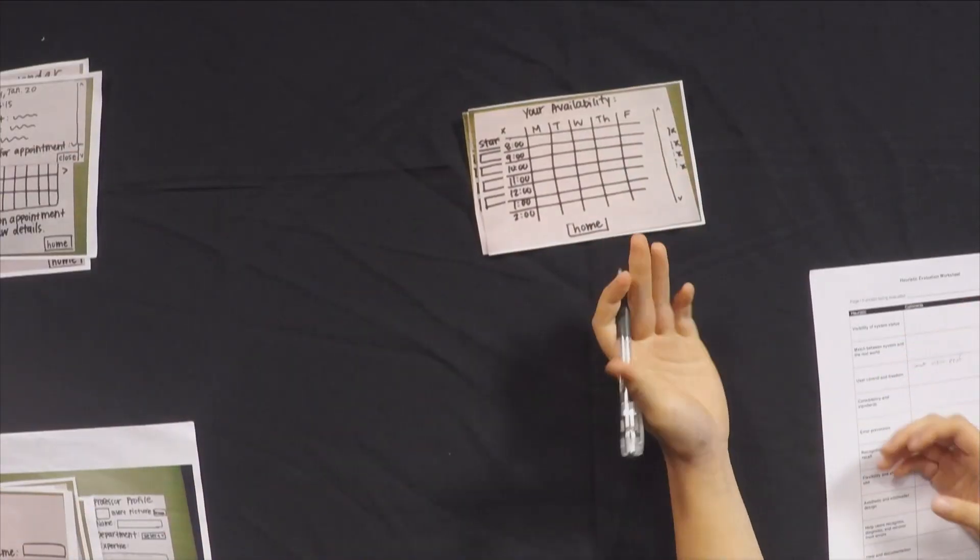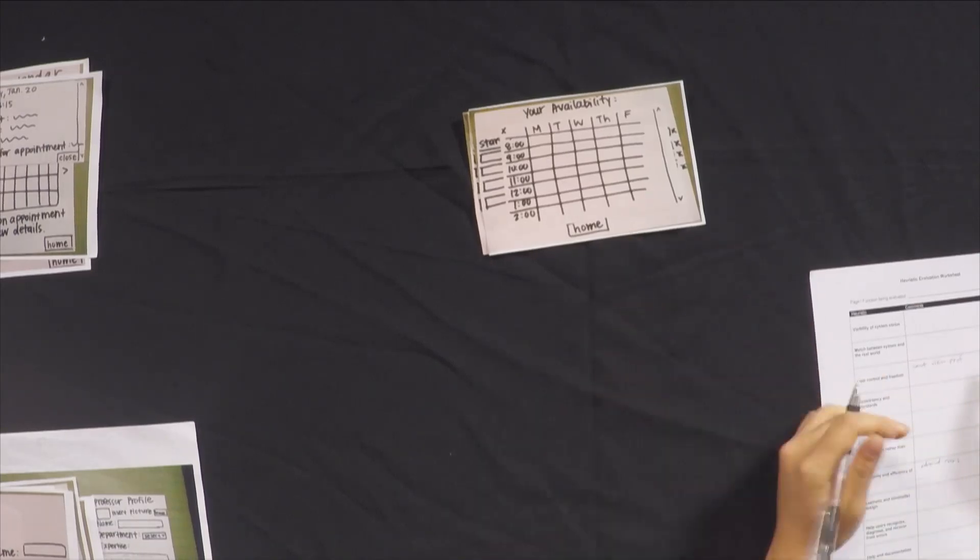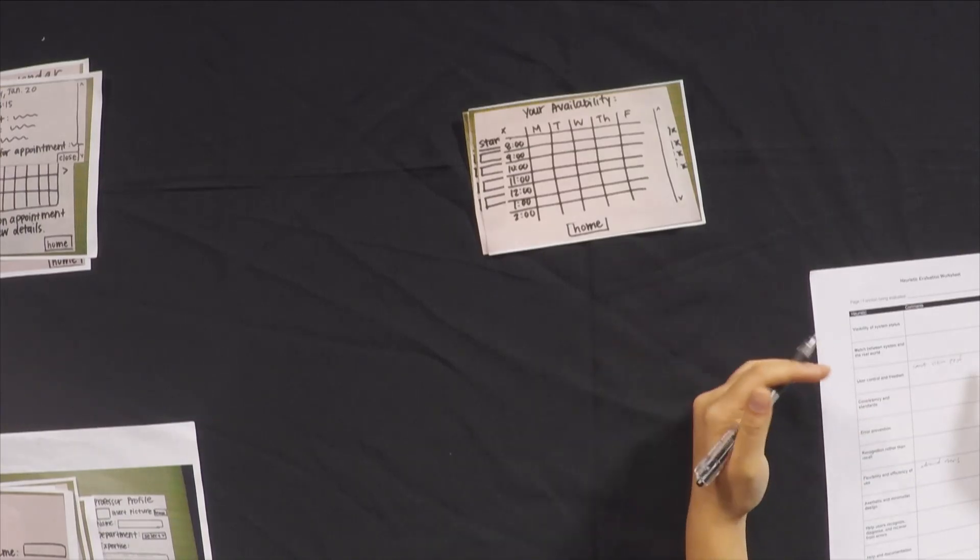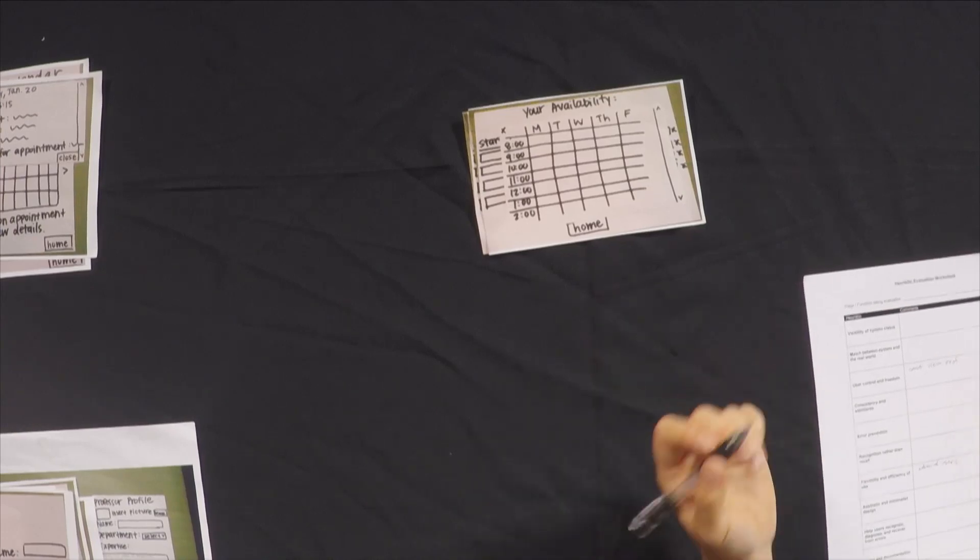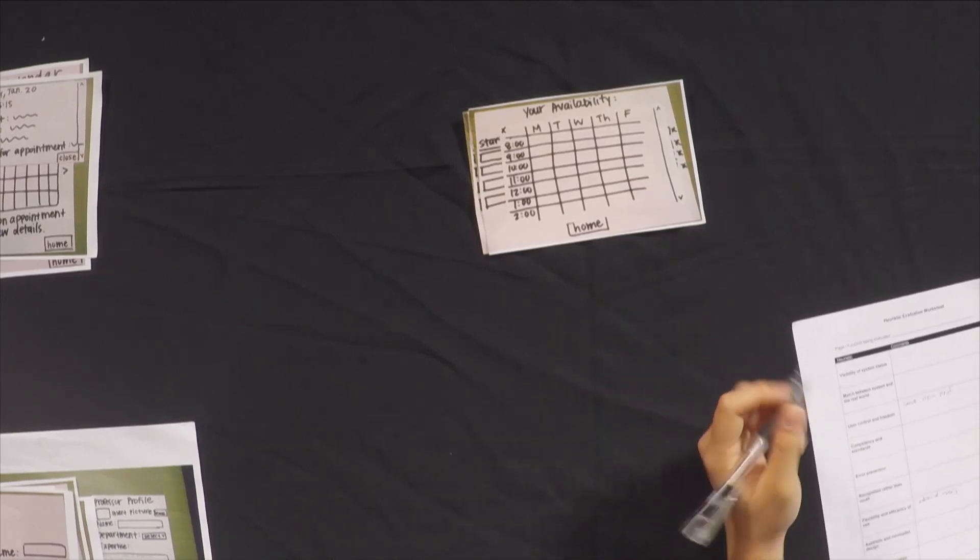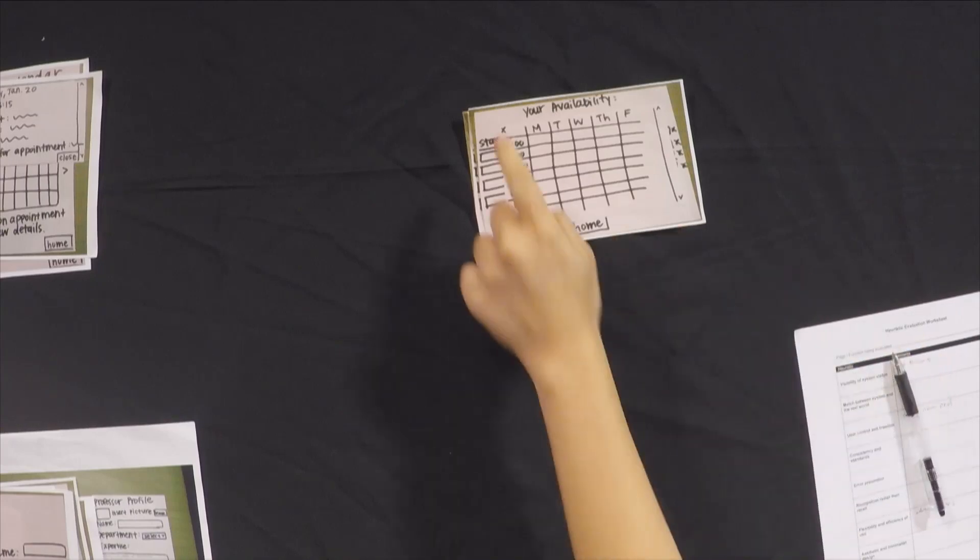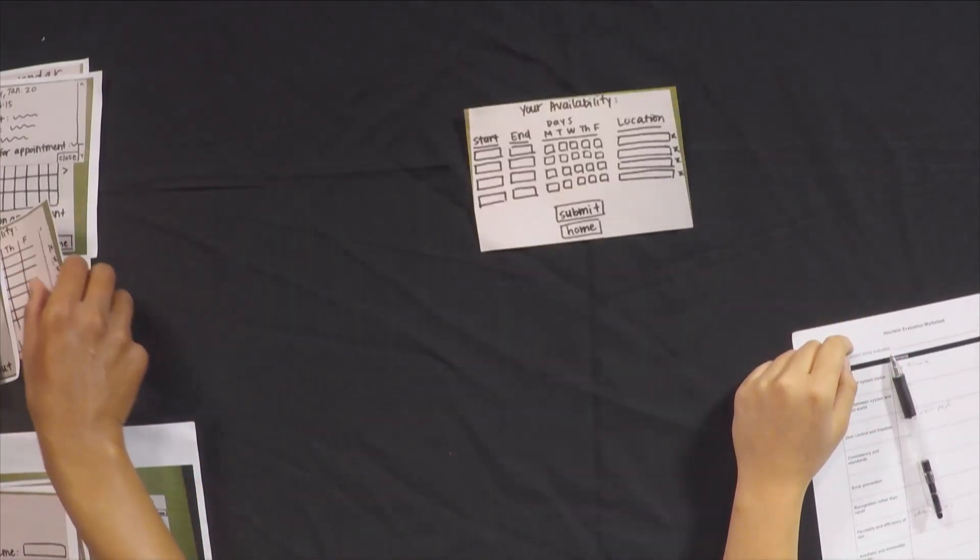Oh, so here are all my available times that I set. It would have been really nice if I was able to see this before setting some times, but that didn't seem like it was available. So I'll add this to visibility of system status that I should be able to see the times beforehand. Now let's close this and let's go home.